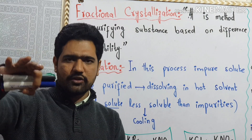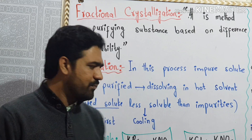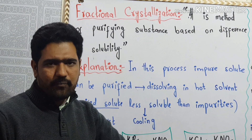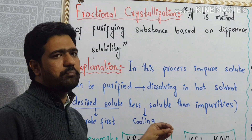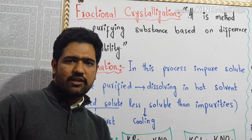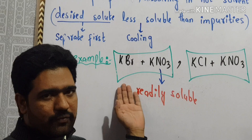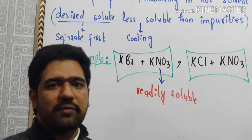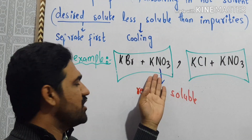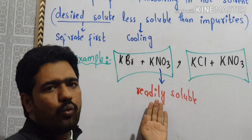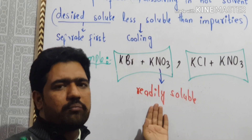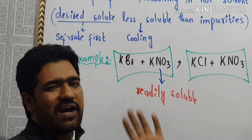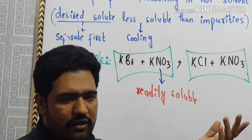You can then filter the solution. When you filter, the pure compound is separated from the impure compound. For example, KBr and potassium nitrate (KNO3) can be separated this way — potassium nitrate crystallizes out separately from KBr.